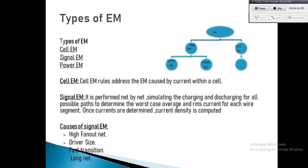Cell EM addresses the EM caused by current within a cell. Cell EM rules operate on the principle that although currents within a cell cannot be calculated due to lack of physical layout information, they can be controlled based on external physical entities. The tool estimates the detrimental effects of currents within a cell as a function of its output load, input slew, or switching frequency.